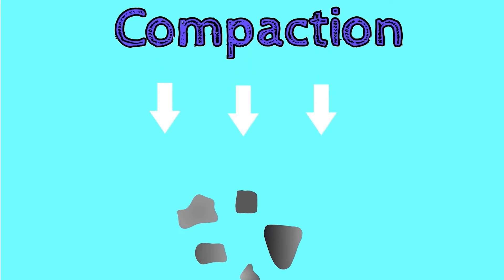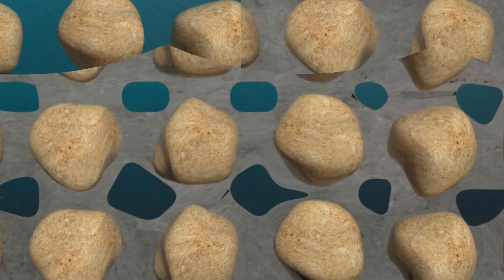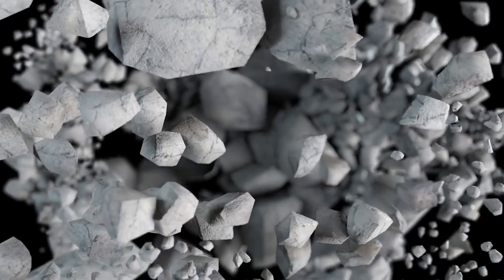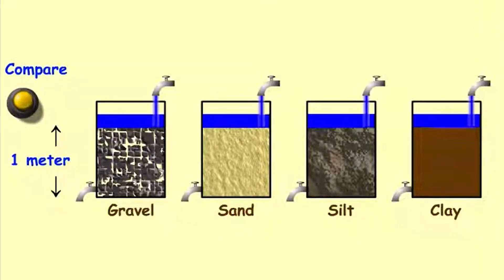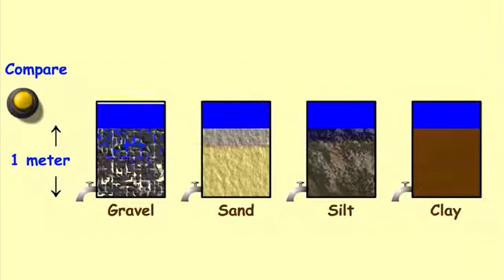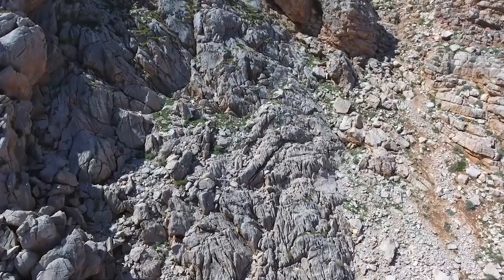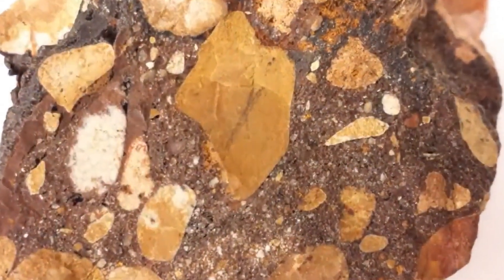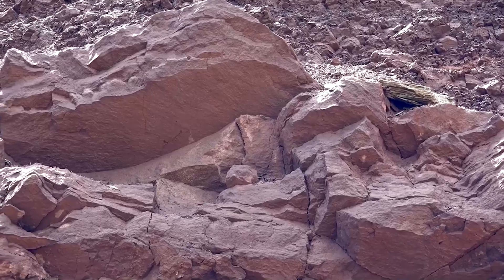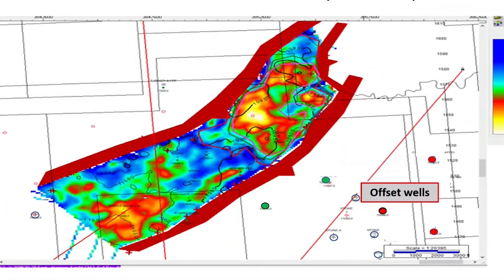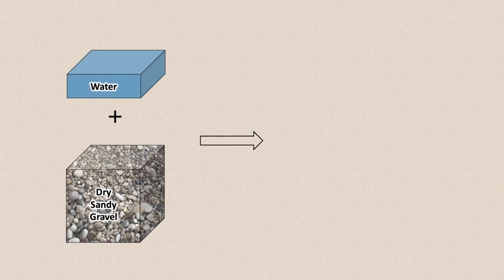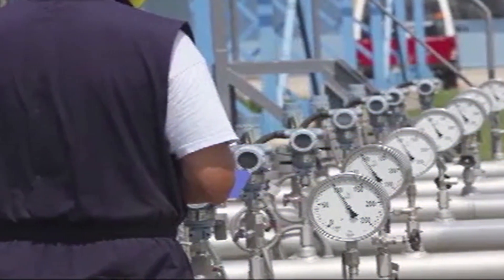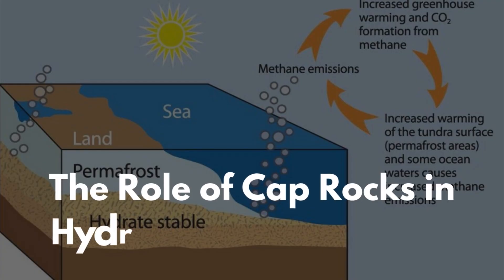The formation of reservoir rocks is a result of sedimentation and diagenesis, the process by which sediments are compacted and cemented into solid rock. The porosity of reservoir rocks determines their capacity to hold hydrocarbons, while permeability affects the ease with which hydrocarbons can flow through the rock. Reservoir rocks often form in specific geological environments such as ancient river deltas, coral reefs, and shallow marine shelves. The quality of reservoir rocks is a critical factor in determining the productivity of an oil or gas field, and geologists study their porosity and permeability to assess reservoir potential.